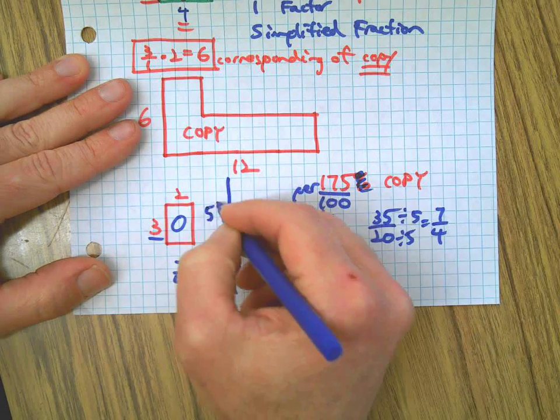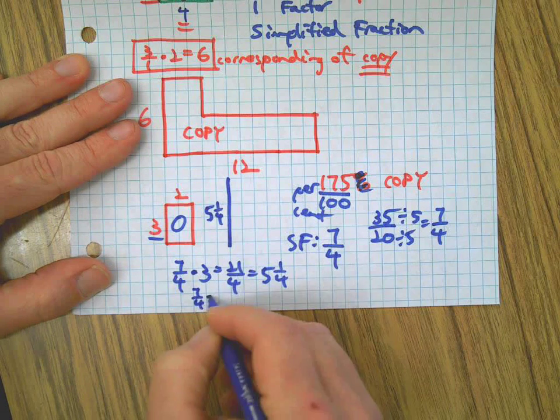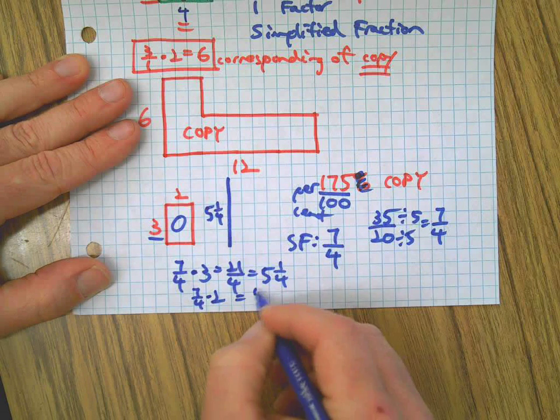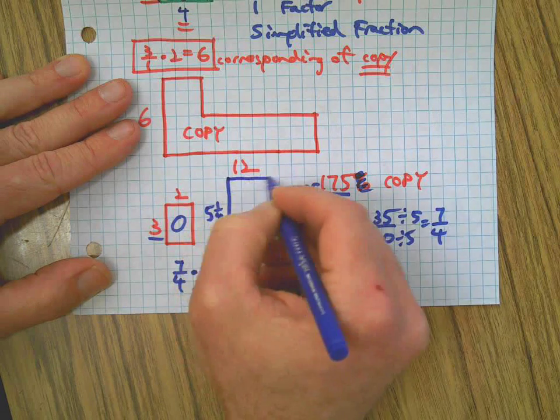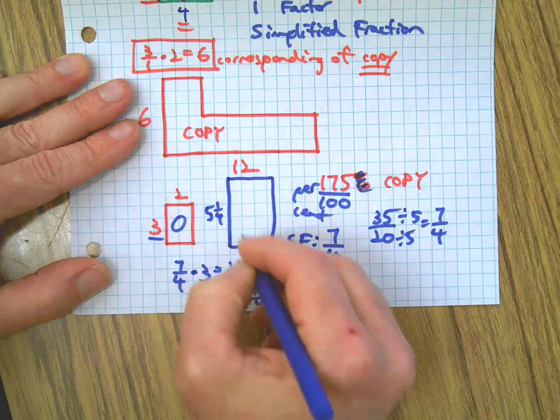And then I can also take 7/4 times my two up there, and that gives me 14/4, which is 3 and 1/2. I can make 3 and 1/2, finish it off. There's my copy.